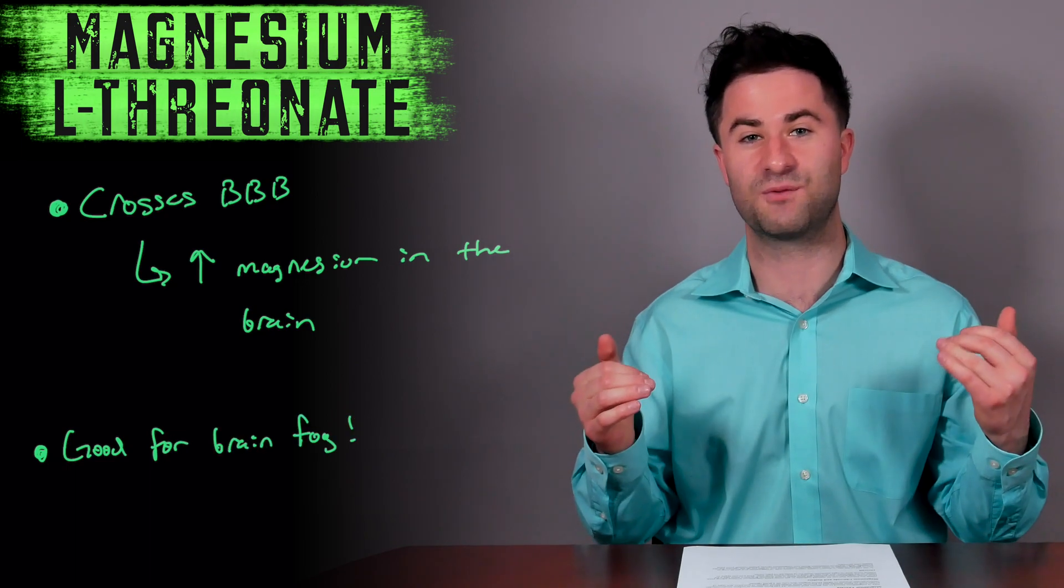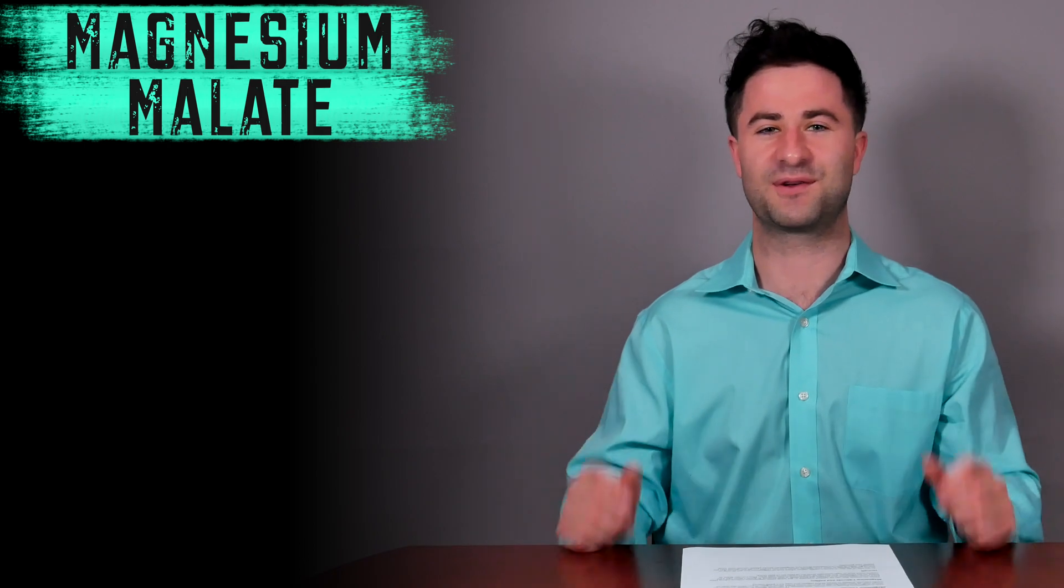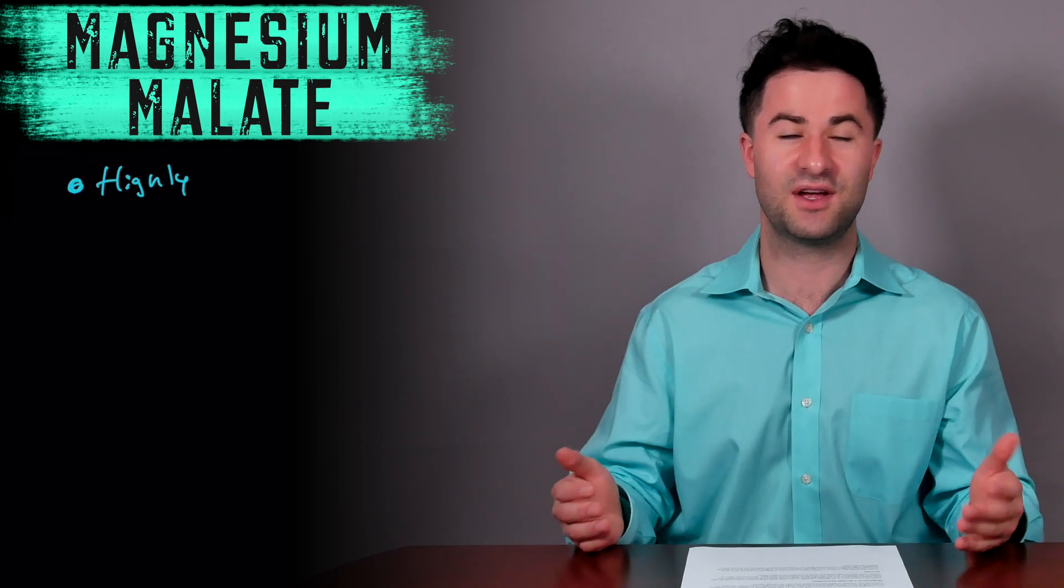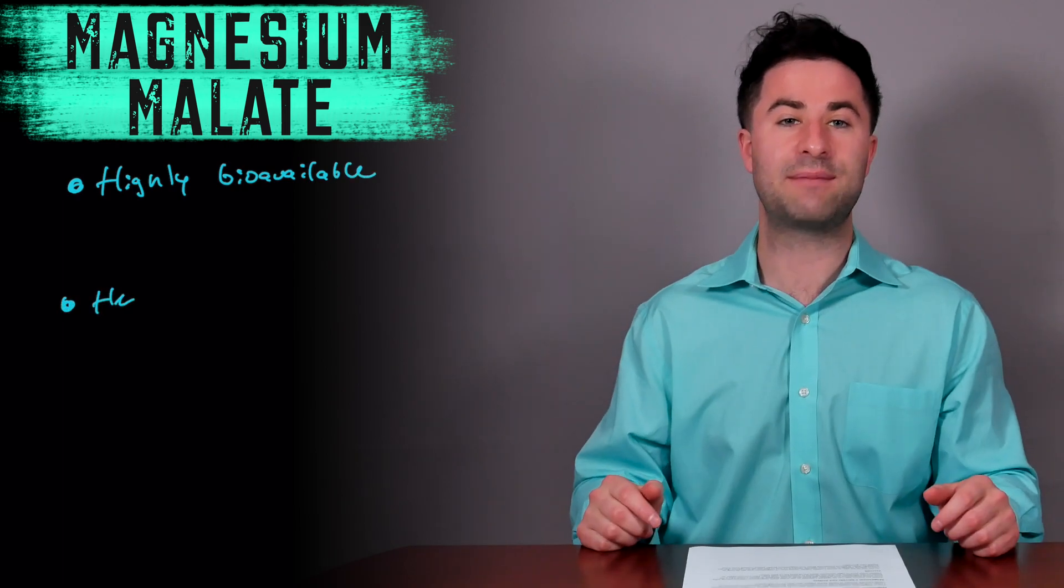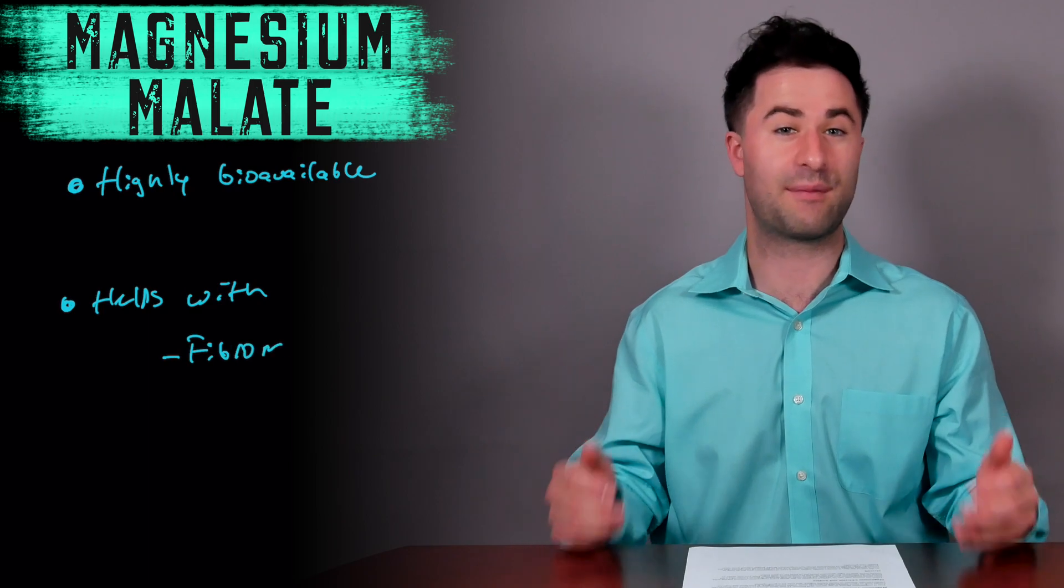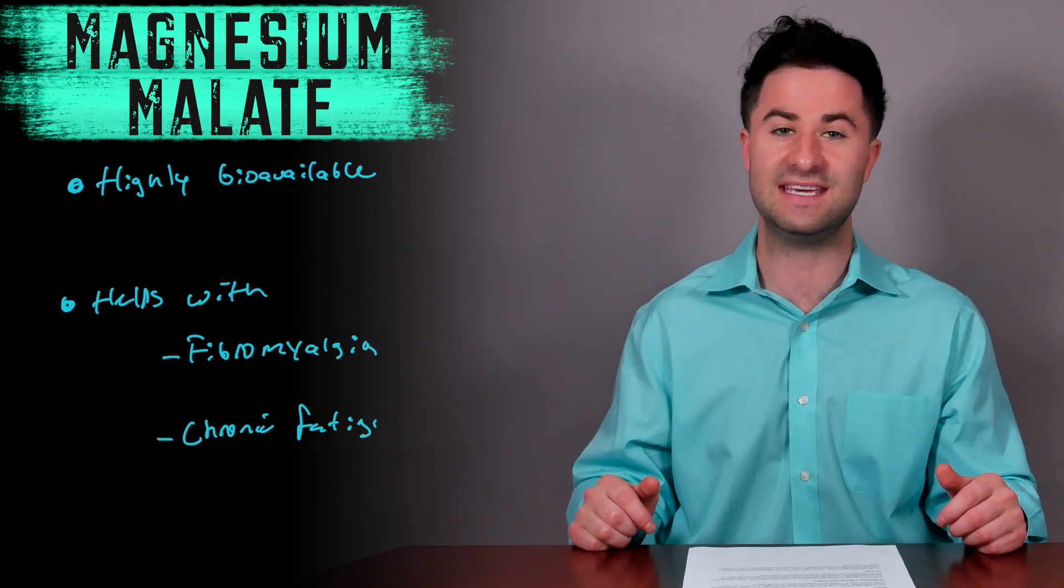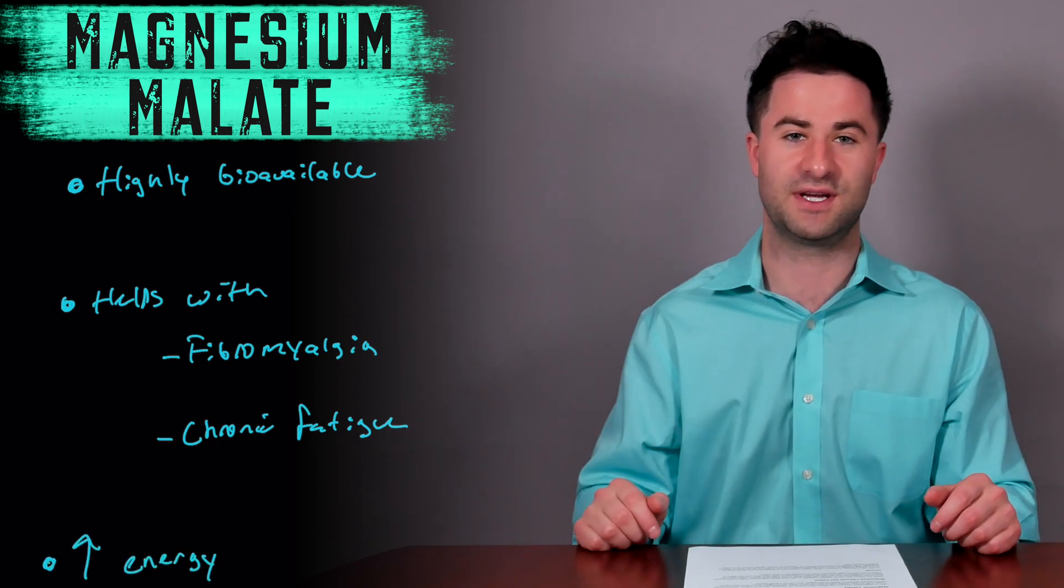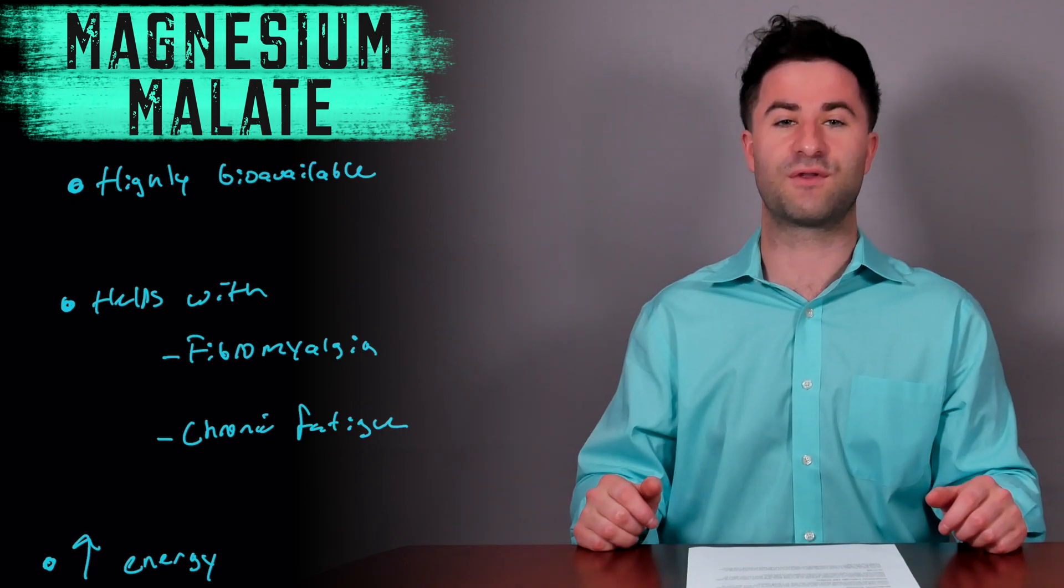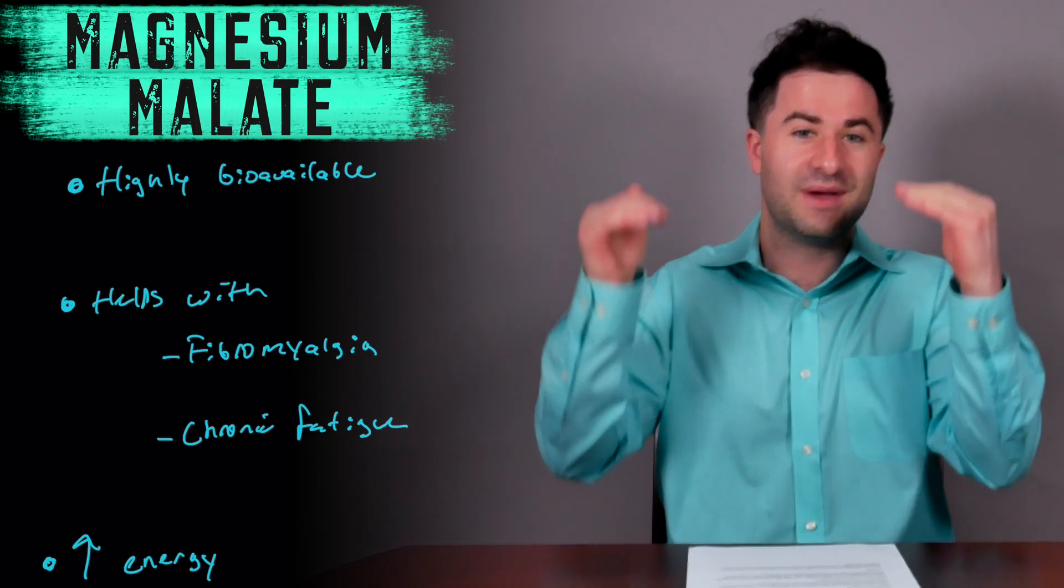The next one we have is magnesium malate. I love alliteration. This is magnesium bound to malic acid, which also helps to raise its overall bioavailability. This type of magnesium has been studied for those who suffer from fibromyalgia as well as those who suffer from chronic fatigue syndrome. Based on the literature, this type of magnesium does give you a bit of a jolt of energy. This can be beneficial for those who do suffer from fibromyalgia or for those who are looking for a little bit of increased energy.